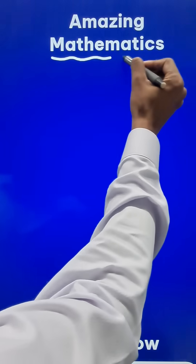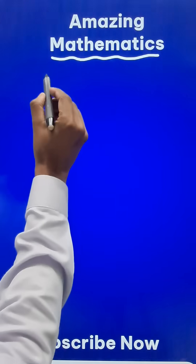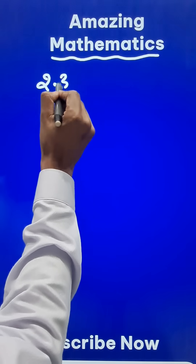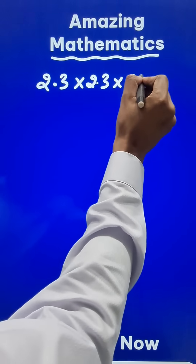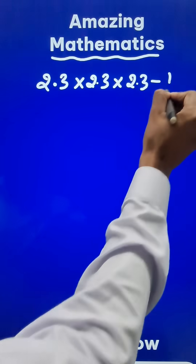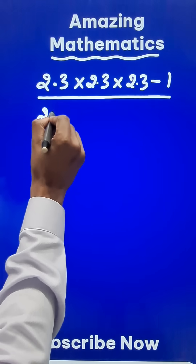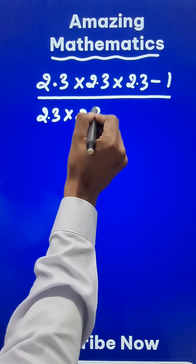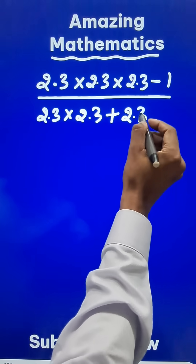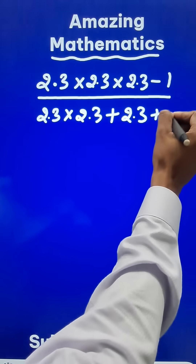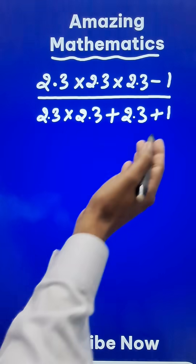Some simplification problems are very easy. Suppose you have a problem: 2.3 times 2.3 times 2.3 minus 1 in the numerator, and in the denominator you have 2.3 times 2.3, then add 2.3 to that, and then add 1 to that. So what will you be doing in this? I think you will be simplifying everything, right?